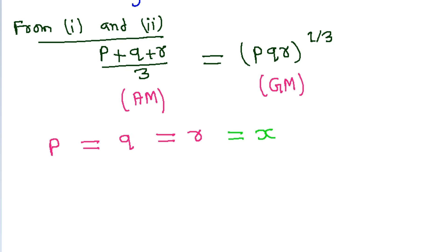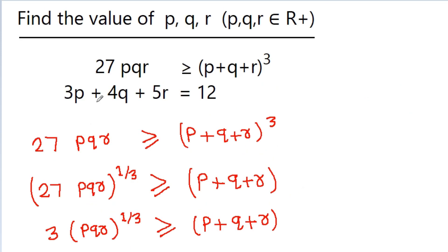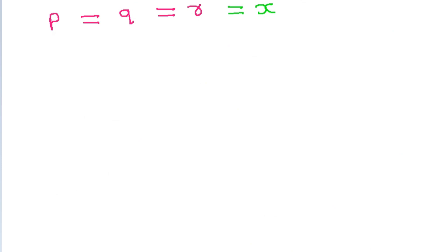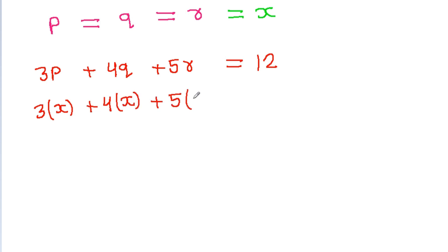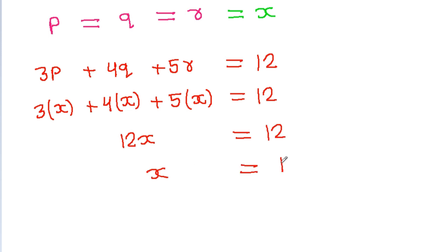Suppose p equals q equals r equals x. The second equation is 3p plus 4q plus 5r equals 12. Substituting, we get 3x plus 4x plus 5x equals 12, so 12x equals 12, which gives x equals 1. Therefore, the value of p equals q equals r equals 1.